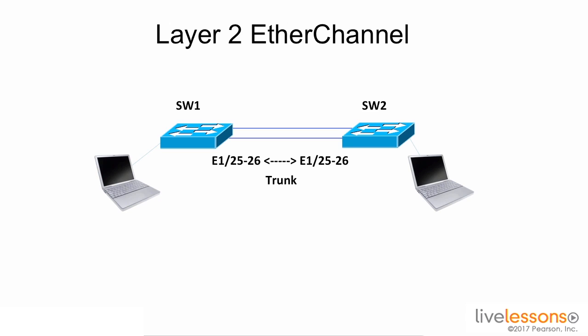The benefits of using this technology in a data center network is that in a normal situation, these two links going between these two switches would cause a loop. Spanning tree would then block one of the links to avoid the loop condition. By grouping these two links in an EtherChannel or a port channel, we make them appear as one, therefore avoiding the loop situation and allowing us to use the full bandwidth between the switches.